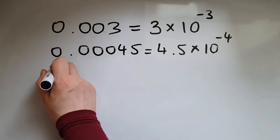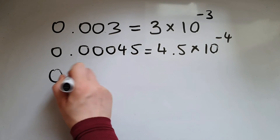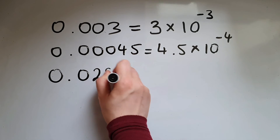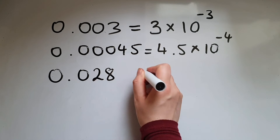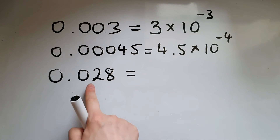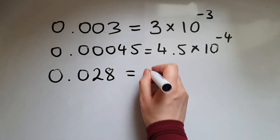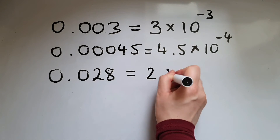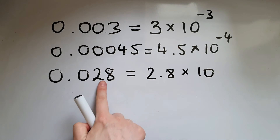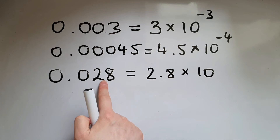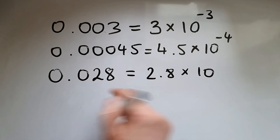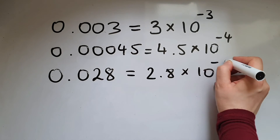If we have 0.0028, we're going to write this as 2.8 times 10 to the power of negative 2.